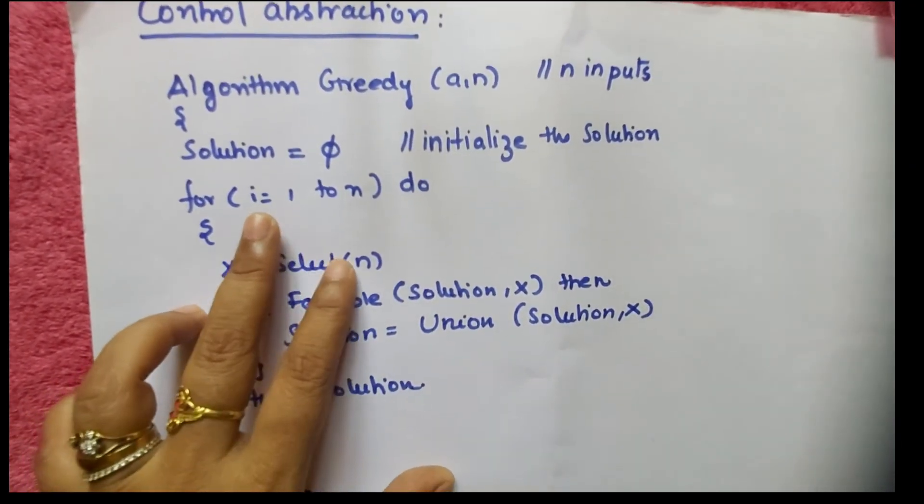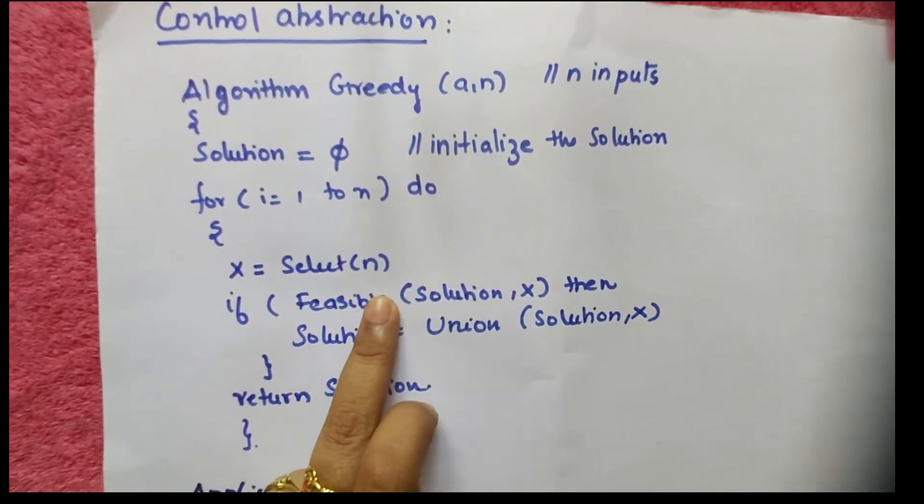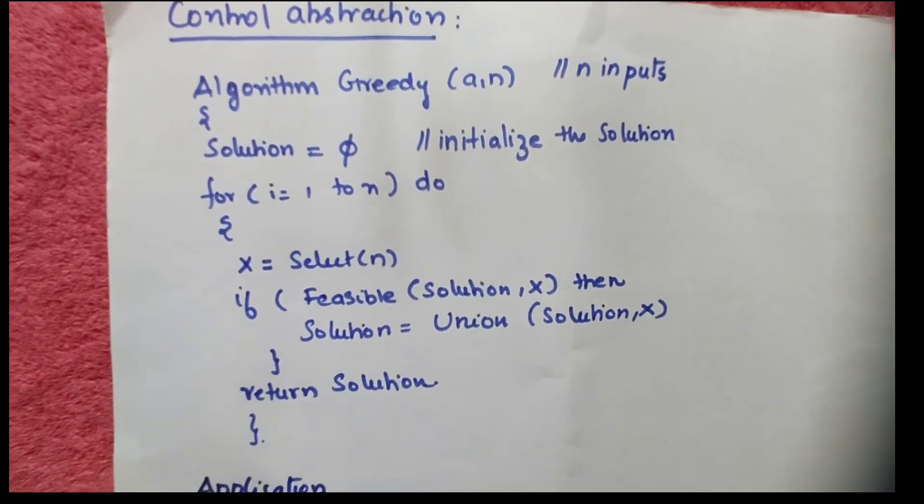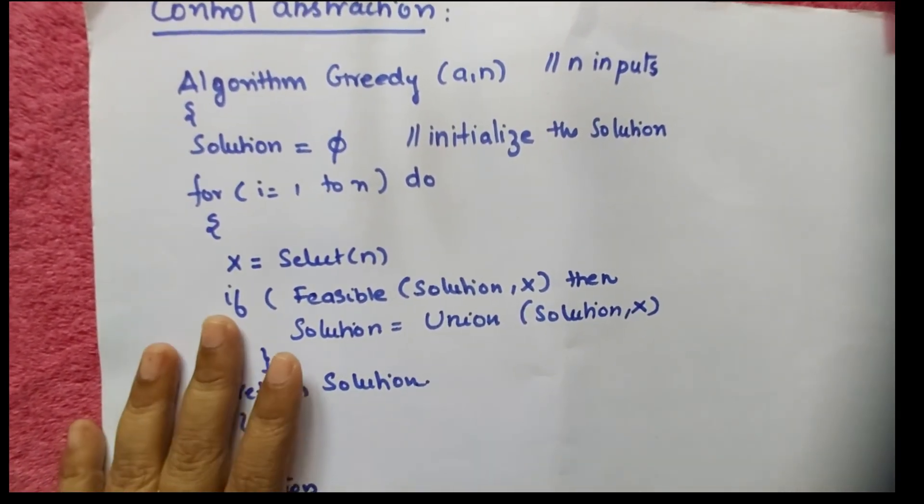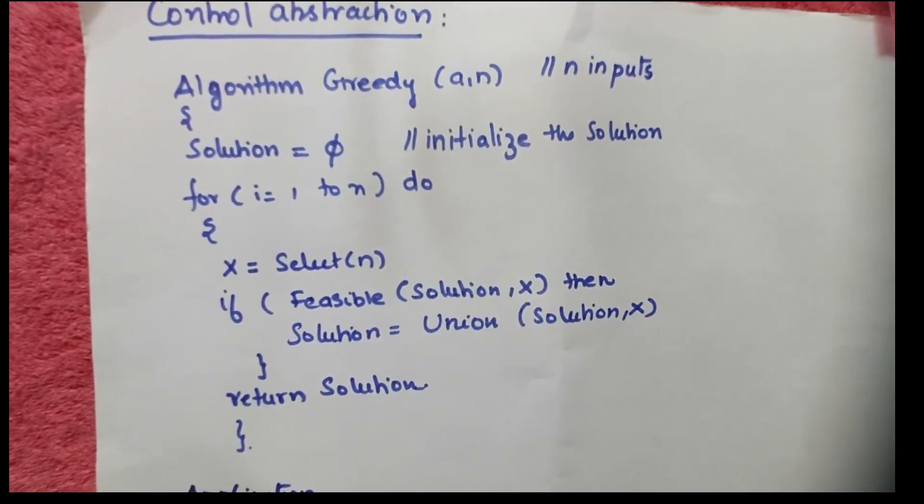Now you are taking a condition from 1 to n. You have to select an input and put it in x, and check whether it is a feasible solution or not. If it is a feasible solution, then we go for an optimal solution.